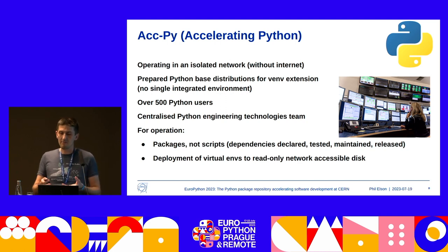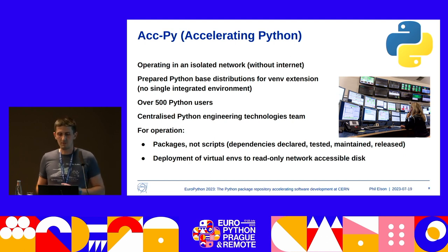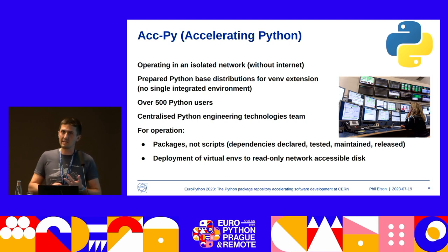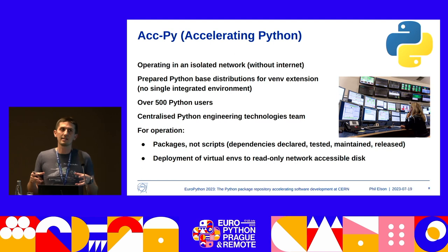Python operating on these accelerators is within a closed network — no internet. So we ship a Python distribution, a bunch of Python-based distributions, which are intended to be extended by our users using virtual environments. We've got around 500 users and there's a centralized support and software engineering technologies team. In terms of deployment, we encourage our developers to produce Python packages rather than Python scripts, because that gives us all the benefits of dependency management and makes it easier to test. Once released, we use virtual environments and put them on a read-only network-mounted disk, meaning every machine in the network can instantly access the same installations.